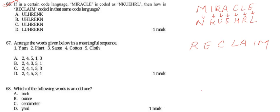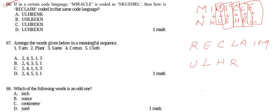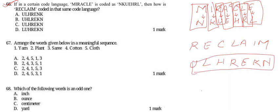Now for 'reclaim': from R we get U, from E we get L, from C we get H, from L we get R, from A we get E, from I we get K, and from M we get N. So the coded word is U-L-H-R-E-K-N. Let us check the options.